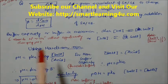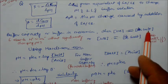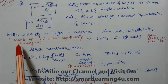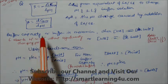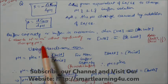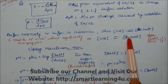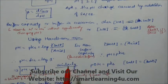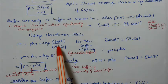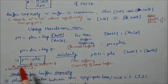Buffer capacity is maximum when the concentration of weak acid is equal to its salt — when both concentrations are equal to each other. At this point the buffer can absorb maximum acid or base without changing the pH. This only happens when the concentration of weak acid equals the salt concentration, meaning the ratio is 1:1. Using the Henderson equation: pH = pKa + log(salt/acid), when both concentrations are equal, pH equals pKa because log(1) equals zero.